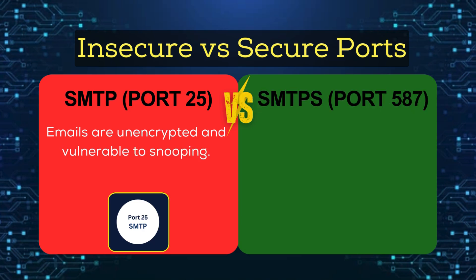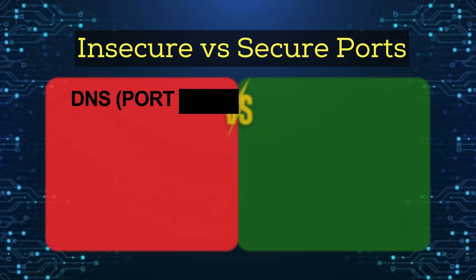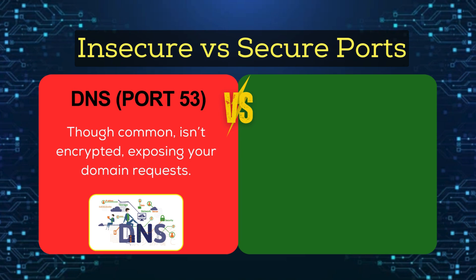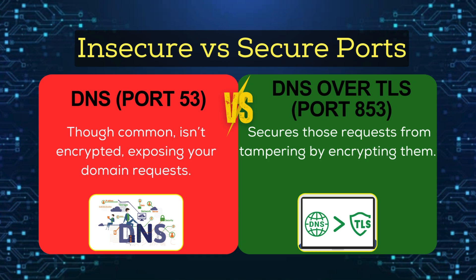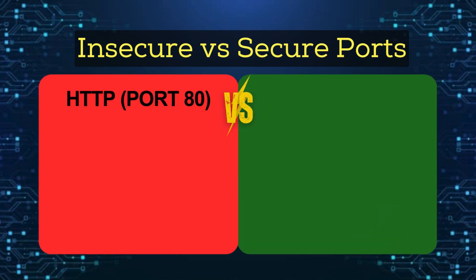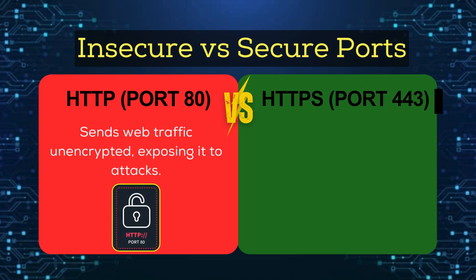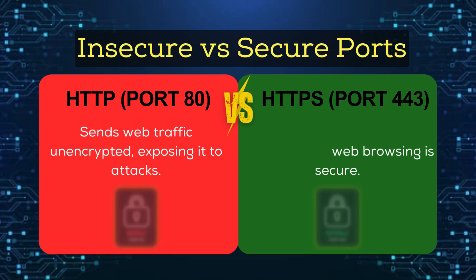SMTP port 25 sends emails unencrypted and vulnerable to snooping. SMTPS port 587 uses TLS encryption, protecting your email communications. DNS port 53, though common, isn't encrypted, exposing your domain requests. DNS over TLS port 853 secures those requests from tampering by encrypting them. HTTP port 80 sends web traffic unencrypted, exposing it to attacks. HTTPS port 443 encrypts traffic with TLS, ensuring your web browsing is secure.